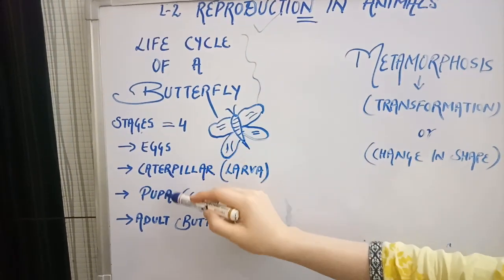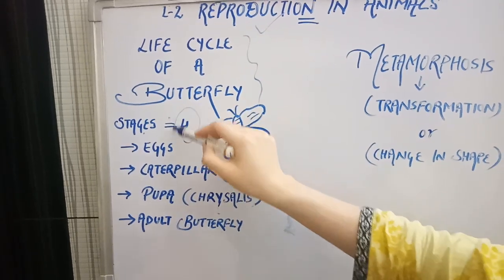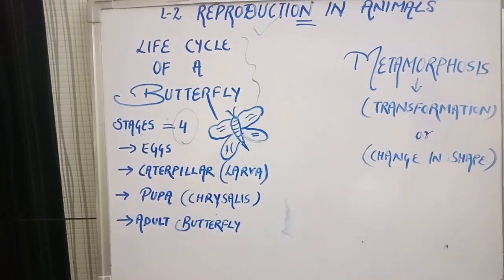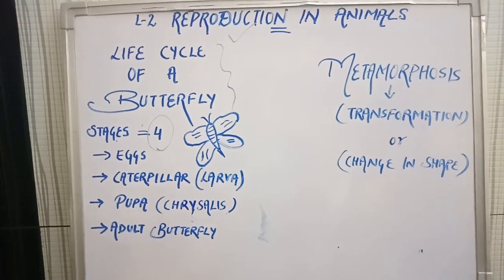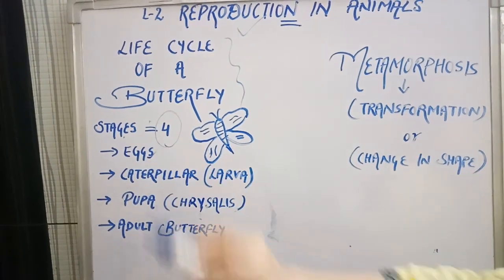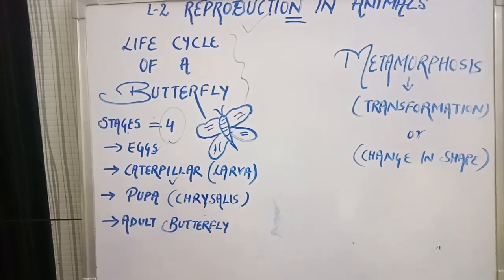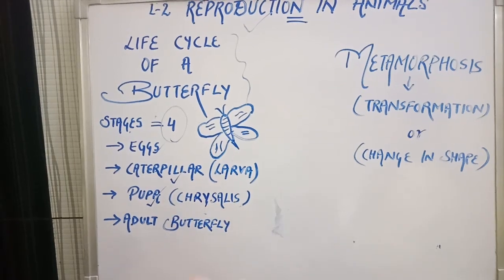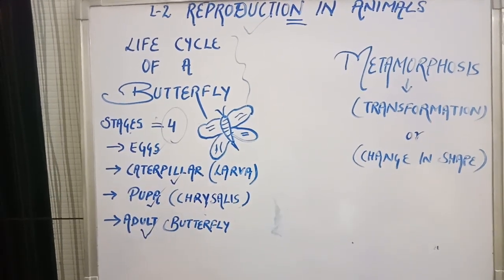There are four stages in the life cycle of a butterfly. There are total four stages. The first one is eggs. The second one is caterpillar. The third one is pupa. And the last one is adult butterfly.